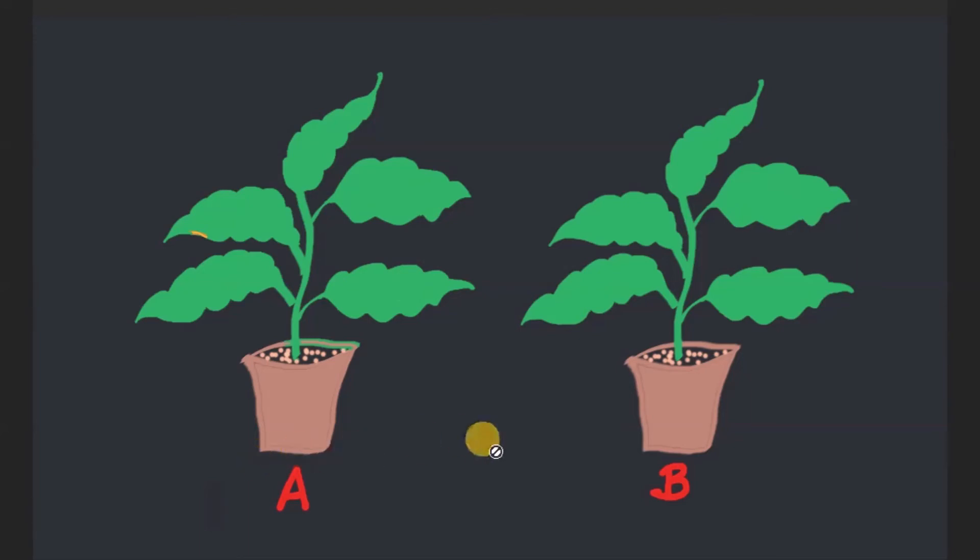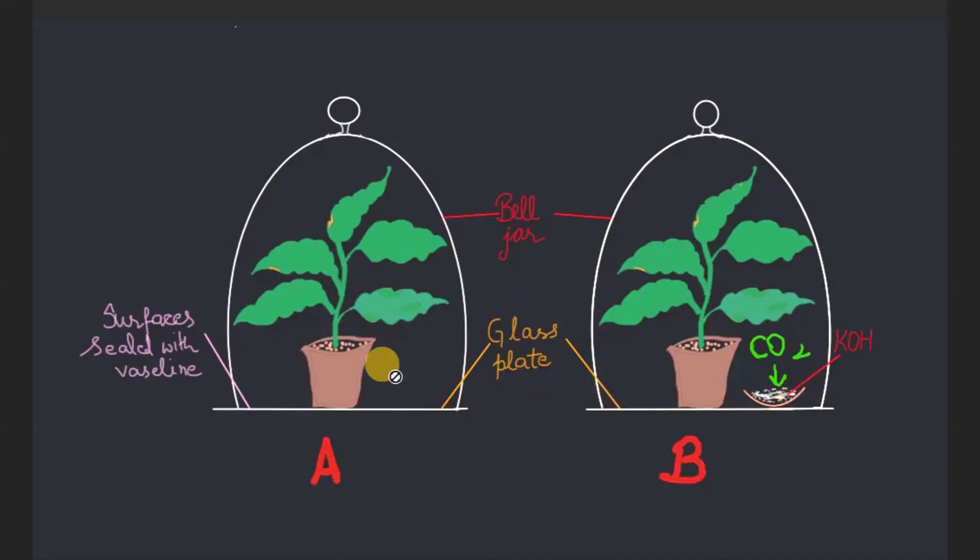We label these plants as A and B. Now after destarching, after three days, we will take these plants out. We will keep these plants on glass plates, and along with plant B, we will keep a watch glass having potassium hydroxide.